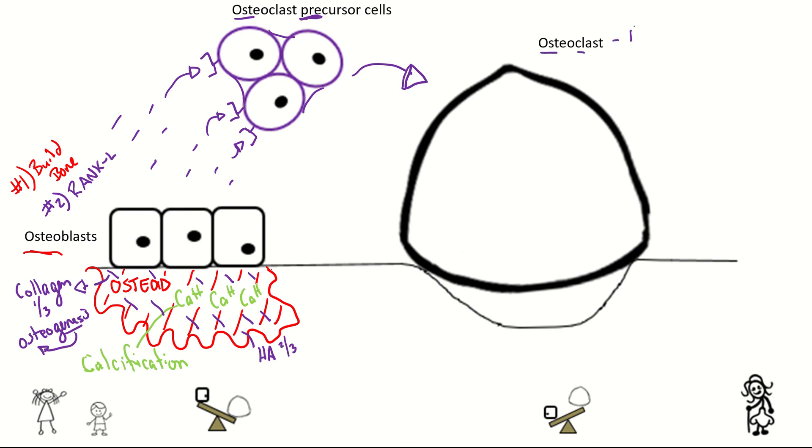Now osteoclasts, their number one job is to crush the bone tissue. And they're going to do that by creating hydrochloric acid near the bone. And they're going to crush the bone, but there's a better word for that. It's called osteolysis. So you're cutting the bone or crushing the bone.